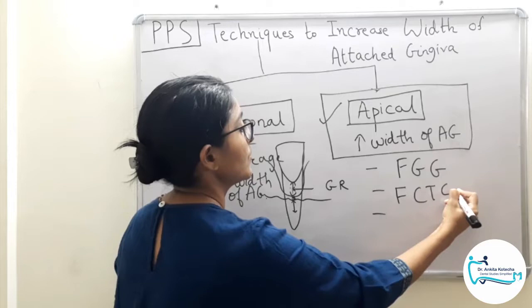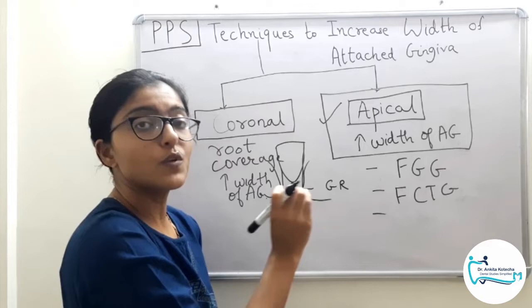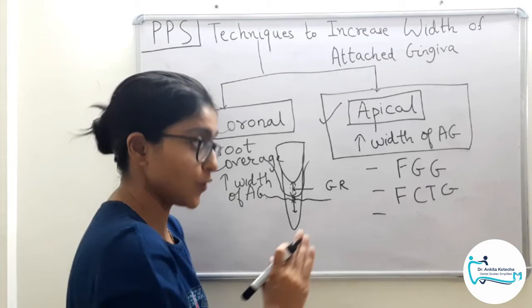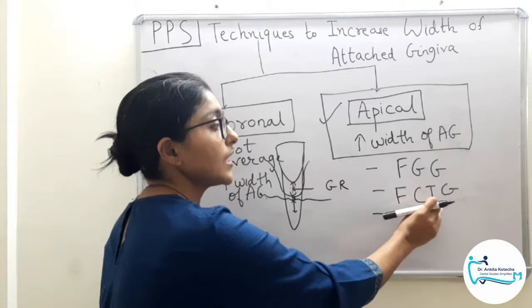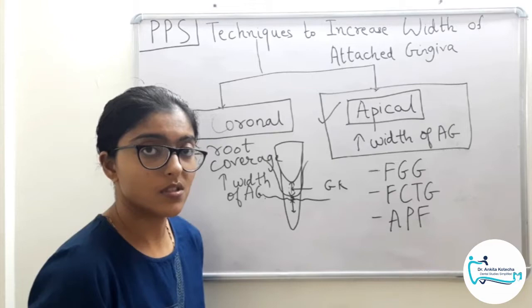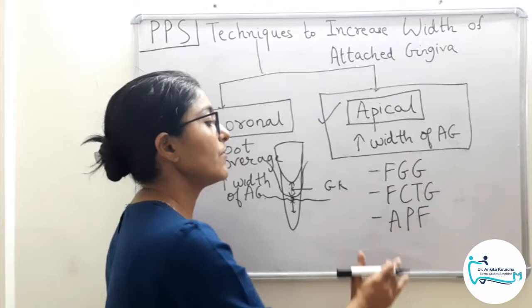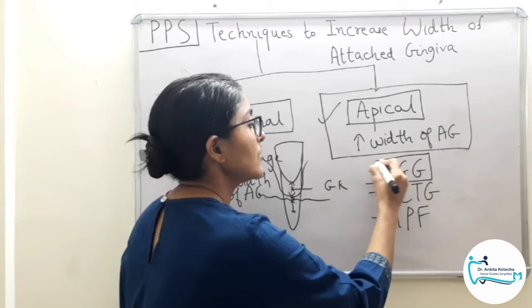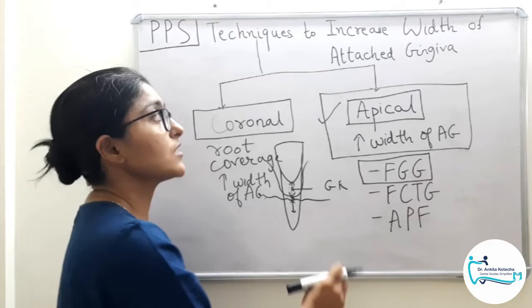Mind you, they are all autografts — the grafts are procured from the same patient. In this category we have free gingival autograft, free connective tissue autograft, and apically positioned flap. For today's video we will discuss only the free gingival autograft.